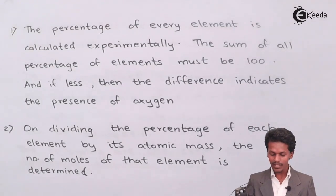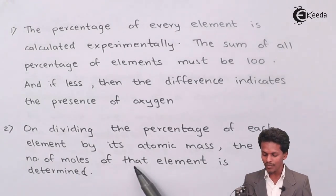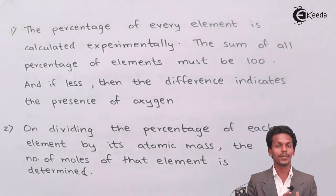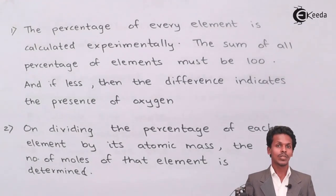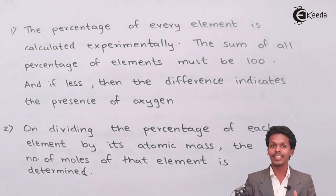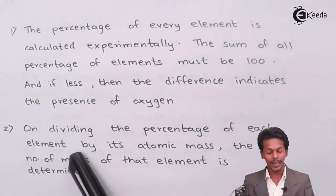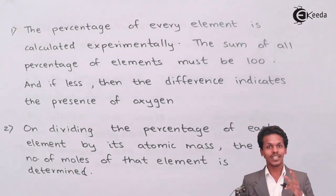Step 2: Divide the percentage of each element by its atomic mass. Since the number of moles equals mass divided by molar mass, dividing the percentage by mass of each element by its atomic mass gives us the number of moles of that element.